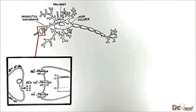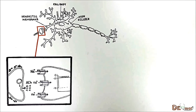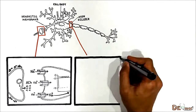It is important to know that at dendrites as well as at the neuronal body, the current flow cannot initiate an action potential, because here we do not have fast voltage-gated sodium channels. The only region near to the dendrites where we do have a high density of voltage-gated sodium channels is the axon hillock.